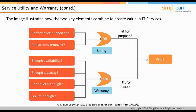Suppose a customer wants to use email as a service. Utility refers to the ability of the service to allow the customer to send and receive email. Warranty is derived from the positive effect of being available when needed, in sufficient capacity or magnitude, and dependable in terms of continuity and security. For example, if the email service is available 24/7, the warranty should provide security so that nobody hacks your account.